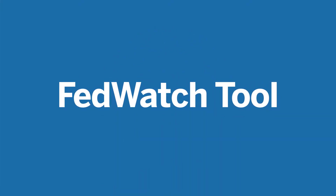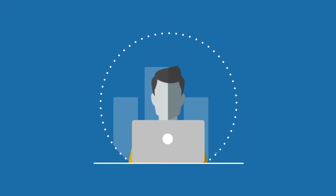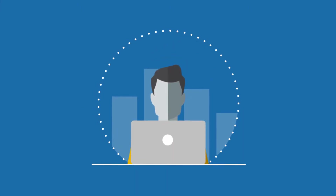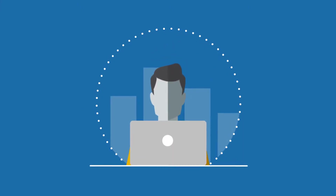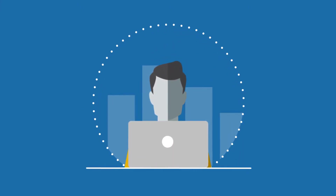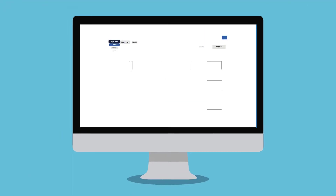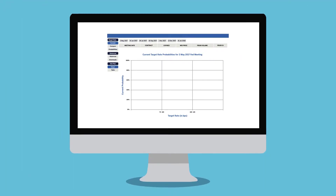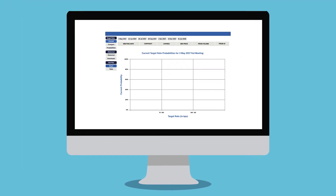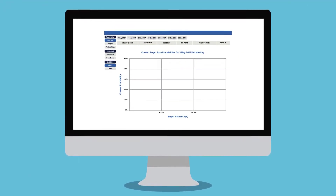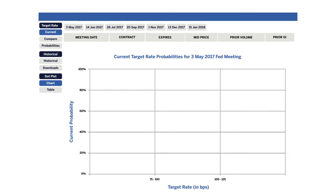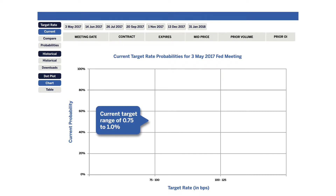This tool acts as a barometer for market participants to gauge the market's expectation of potential changes to the Fed Fund's target rate while assessing potential Fed movements around FOMC meetings. Let's assume that the FOMC's target range is currently set at 0.75 to 1%, or 75 to 100 basis points.